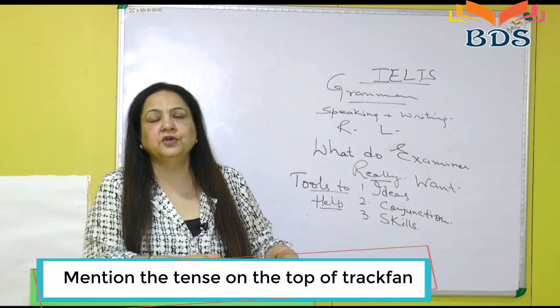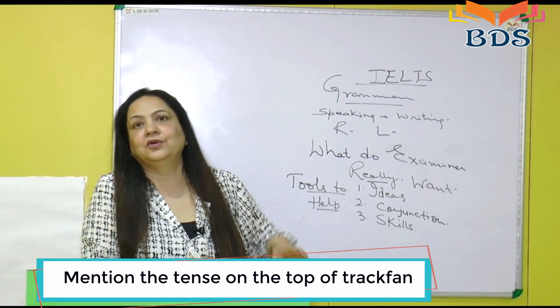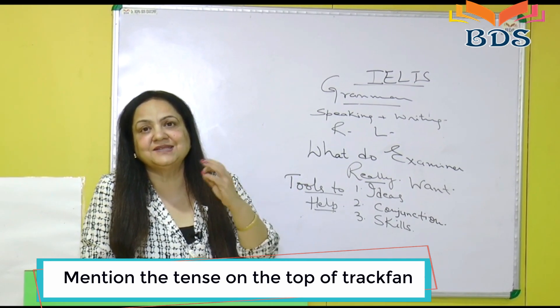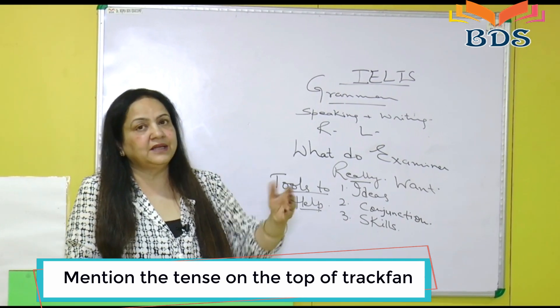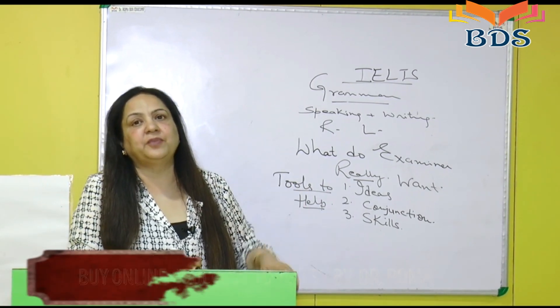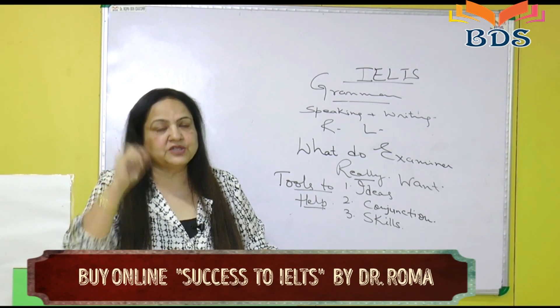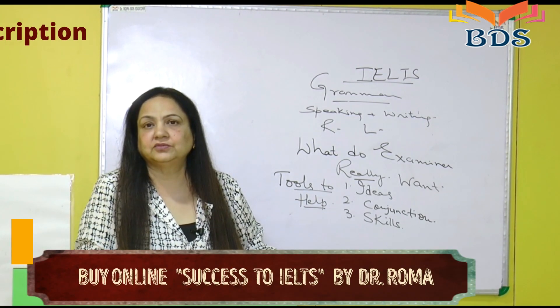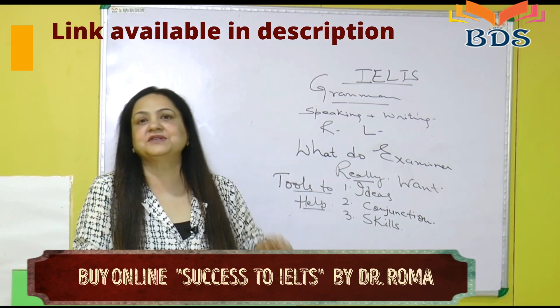When you make your diagram, flow chart, or track plan, write on top of it which tense this card is in. For example, if this is a card about a party, write a small note that this card is to be done in past tense.